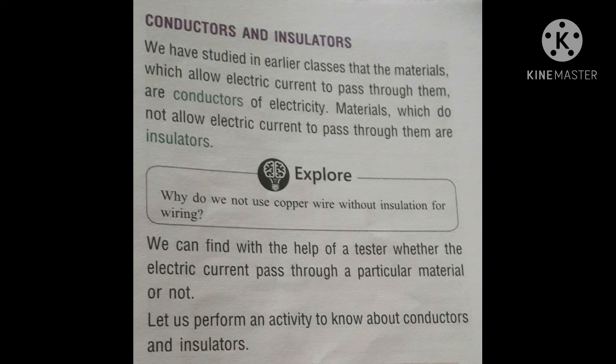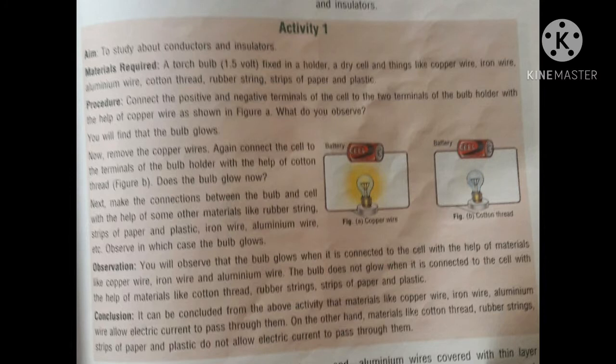We can find with the help of a tester whether electric current passes through a particular material or not. Now we do Activity 1. The aim is to study about conductors and insulators. Materials required: a torch bulb of 1.5 volt fixed in a holder as shown in the picture, a dry cell, and things like copper wire, iron wire, aluminum wire, cotton thread, rubber string, strips of paper and plastic.